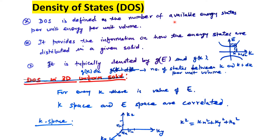Density of state is defined as the number of available energy states between energy E and E plus dE. It provides information about how the energy states are distributed in a given solid and how close the energy states are. It is very important in the case of semiconductors and is typically denoted by G(E) in energy space and G(K) in K-space. G(K)dK tells the number of states between K and K plus dK per unit volume. K-space and E-space are correlated using E = ℏ²K²/2m.